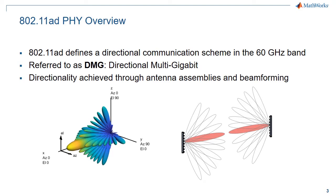To overcome the large path loss at 60 GHz, directionality is required. This is achieved using antenna assemblies such as phased arrays and beam steering at the transmitter and receiver.